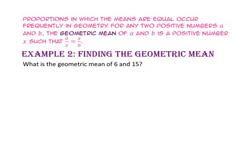Proportions in which the means are equal occur frequently in geometry. For any two positive numbers A and B, the geometric mean of A and B is a positive number X such that A to X equals X to B. Remember, the geometric mean occurs twice in the proportion.